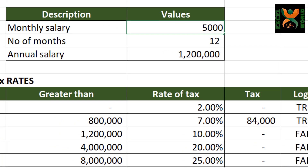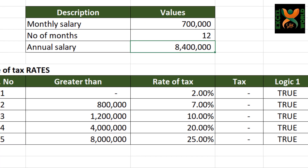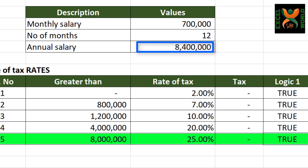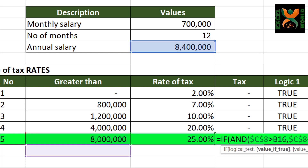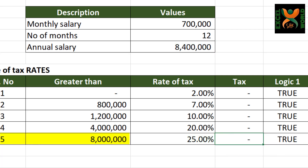Let us change the figures — it should automatically move into the next slabs. Yes, it is. Try a bigger figure. Once our salary exceeds the maximum slab, it does not calculate the accurate figure. The reason is that there is nothing defined beyond that point.